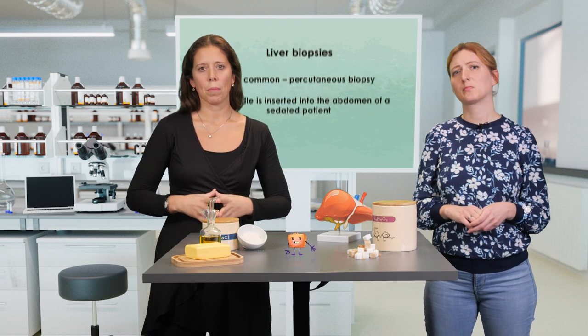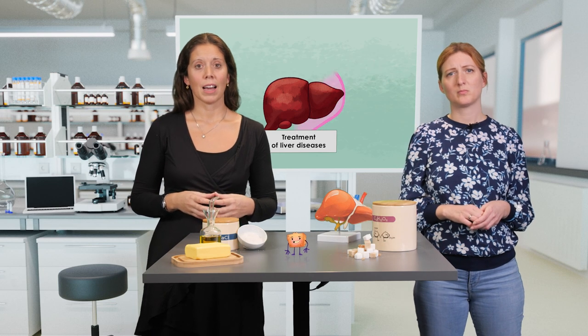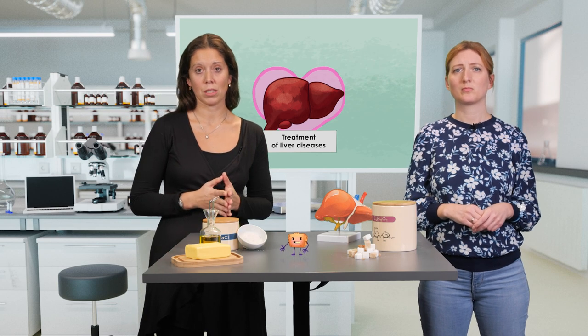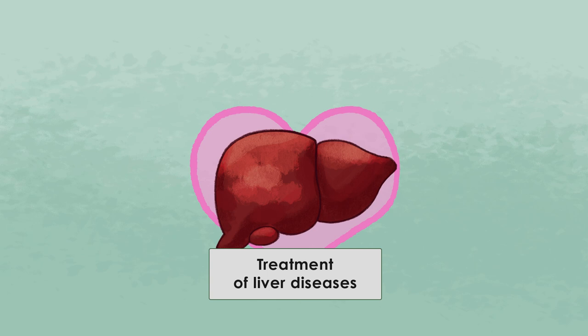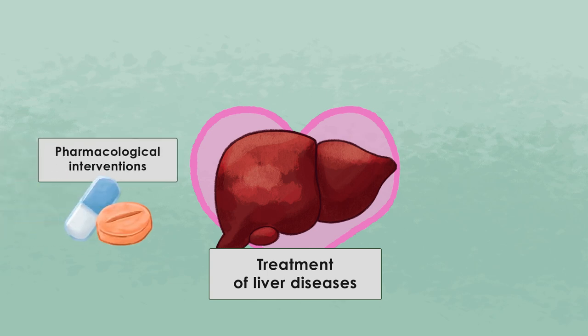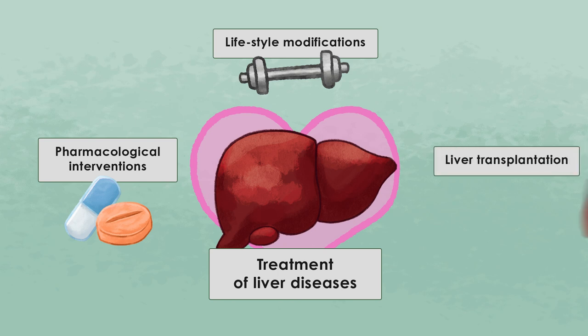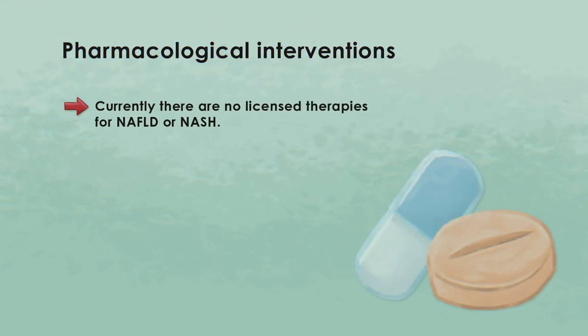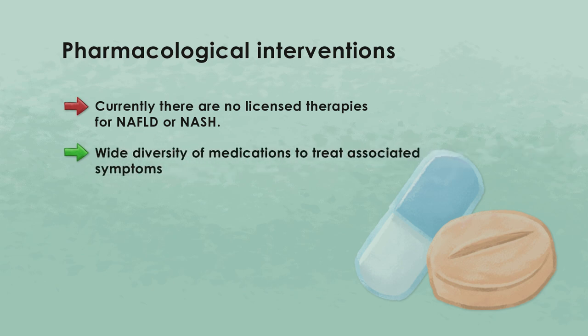The treatment of the patient depends on the exact diagnosis. The treatment strategies for liver disease range from pharmacological intervention and lifestyle modifications up to liver transplantation, in cases where the liver is damaged beyond the body's capacity to regenerate. When it comes to medications, there are currently no licensed therapies for NAFLD or NASH, despite their prevalence and clinical significance. However, a wide diversity of medications exist to treat the symptoms associated with liver disease and metabolic syndrome.